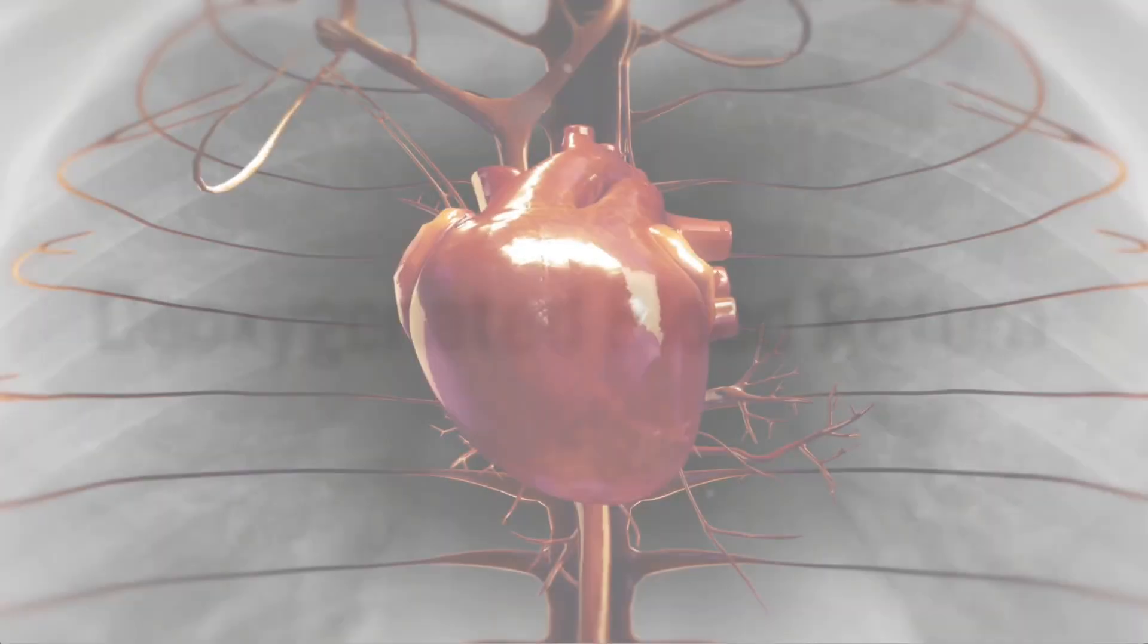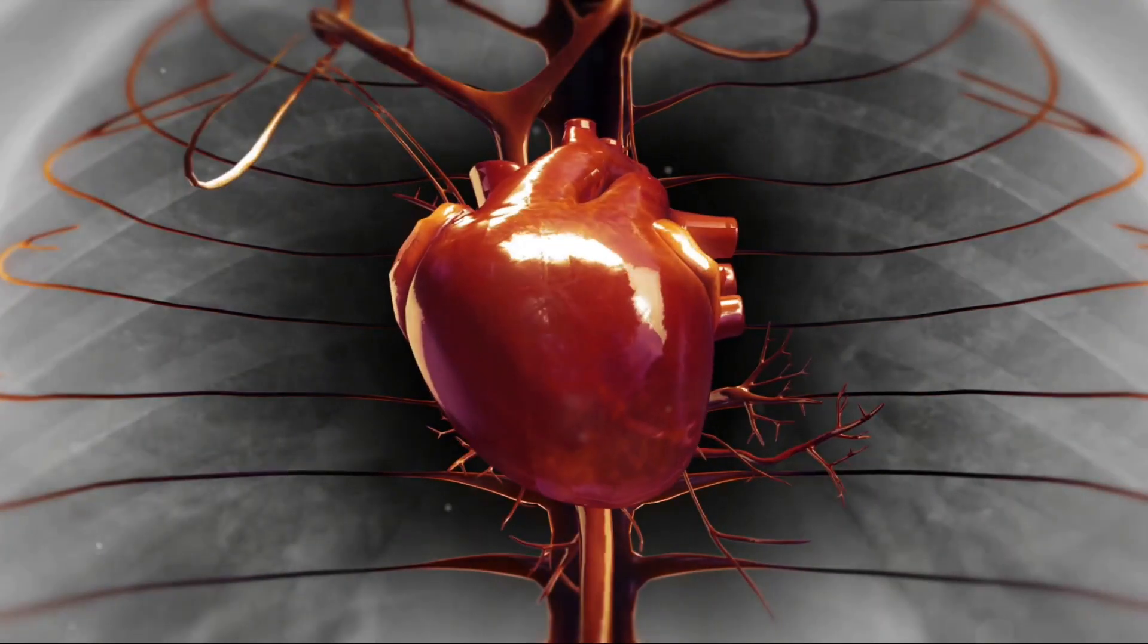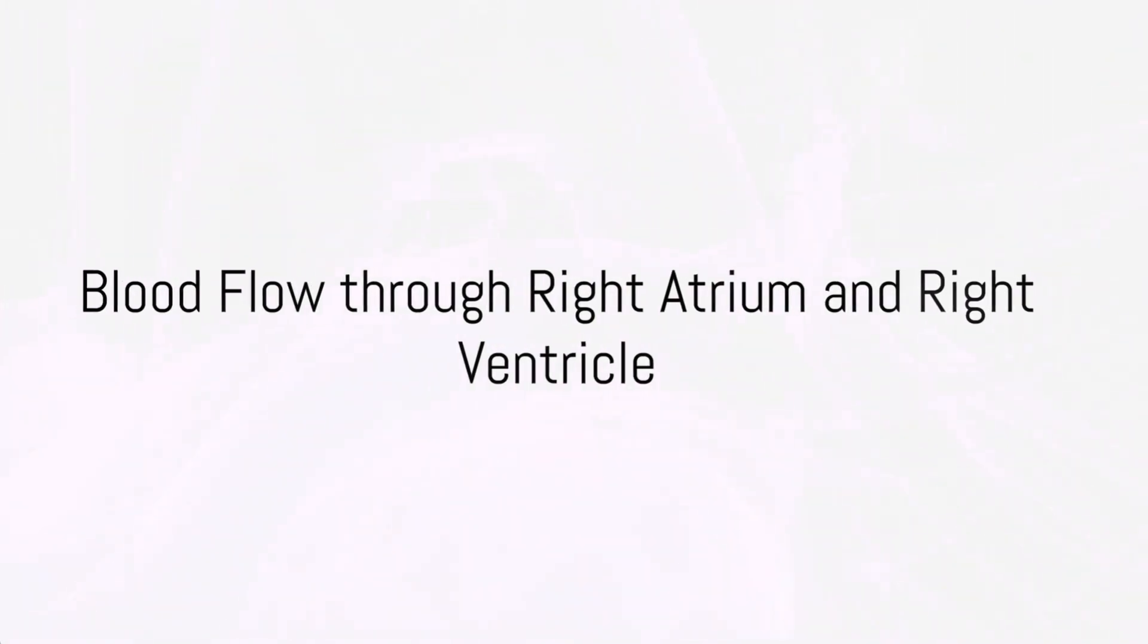First, deoxygenated blood returns to the heart from the rest of the body through two large veins called the superior and inferior vena cava. This blood enters the right atrium, one of the four chambers of the heart.